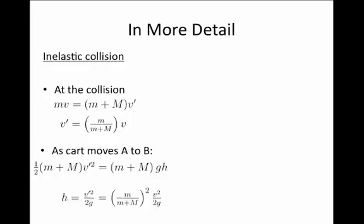Here we may solve and say that h is equal to v prime squared over 2g. But we already had a solution for what is v prime. And we may insert using the known quantities of the two masses and the initial speed of the bullet.